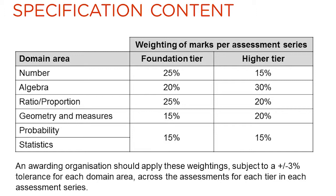The content of the new GCSE has been weighted differently to the current GCSE. The new domain area, ratio, proportion and rates of change, is given 25% at foundation tier and 20% at higher tier. The proportion of marks given to number and ratio proportion is 50% of the paper at foundation tier, whereas probability and statistics make up 15%. At higher tier, ratio, proportion and number make up 35% and probability and statistics make up 15%. There is a tolerance of 3% for each of these domain areas across the assessment for each tier.